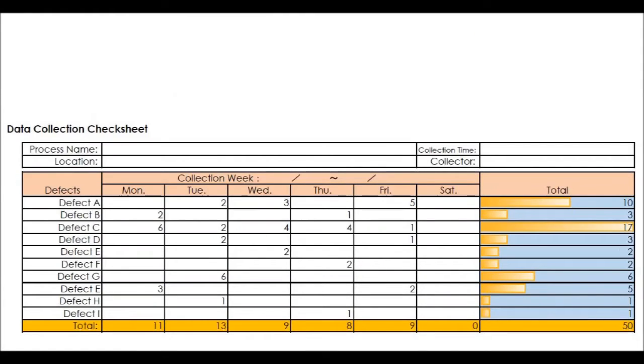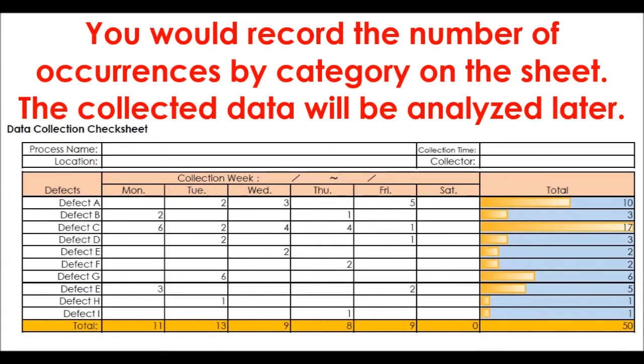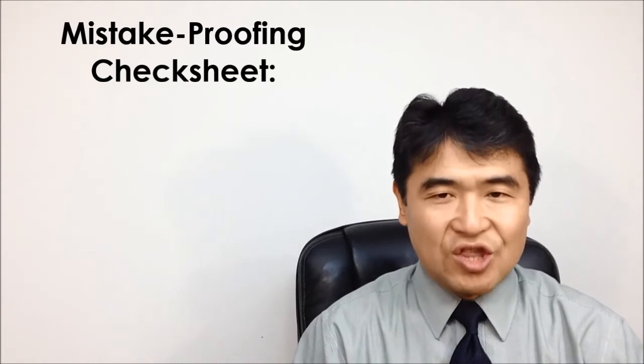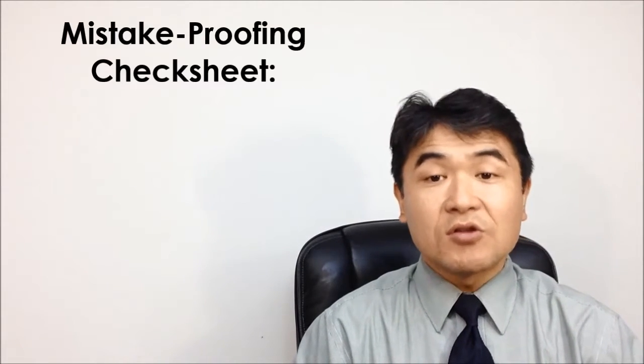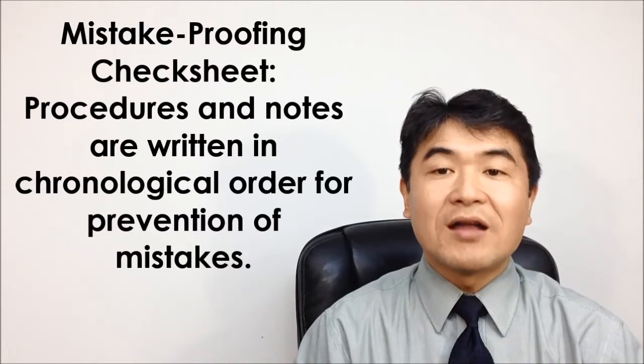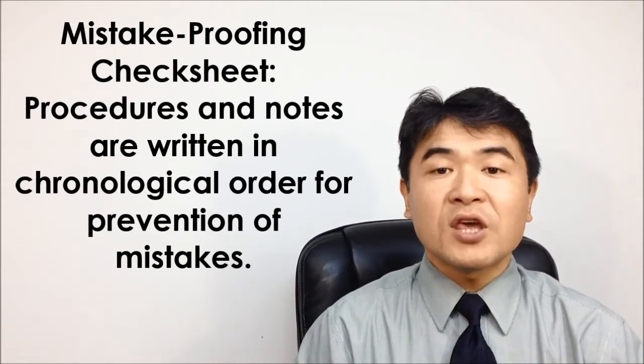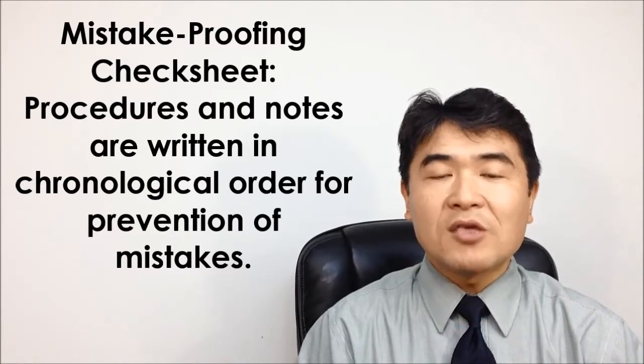This is a check sheet. This example is for data collection. You would record the number of occurrences by category on that sheet. The collected data will be analyzed later. There is another kind of check sheet. For mistake proofing, also known as a checklist or to-do list, procedures and notes are written in chronological order for prevention of mistakes.